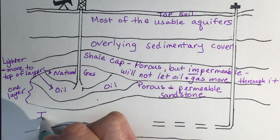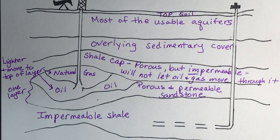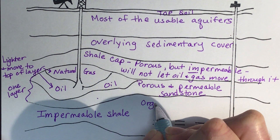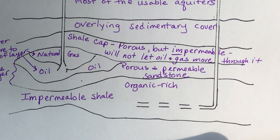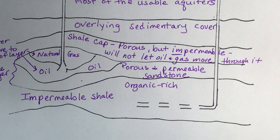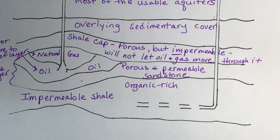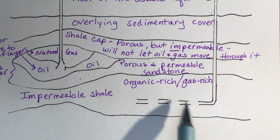Down below we have impermeable shale. Shale is a sedimentary rock and breaks apart easily. This layer is organic rich — organic meaning from a living thing. These are ancient living things; fossil fuels are ancient organisms buried under heat and pressure over time that turn into fossil fuels. So we say this layer is organic rich, and we can also say it is gas rich. When we do fracking for natural gas, we want this shale layer.